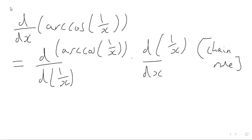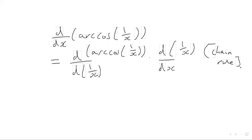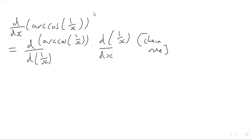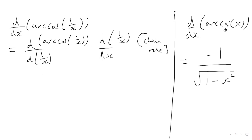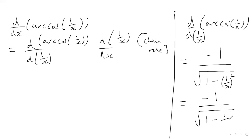If we do this differentiation, we need to know the derivative of the arccos function first. We know from a previous video that when you differentiate arccos of x with respect to x, you get negative 1 over the square root of 1 minus x squared. If we swap the variable x for 1 over x, the result becomes negative 1 over the square root of 1 minus 1 over x squared.